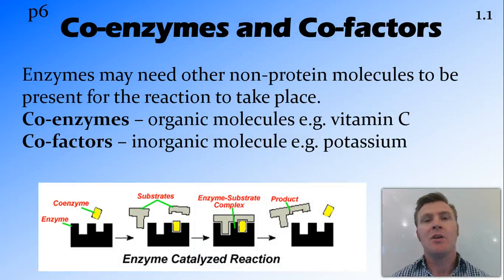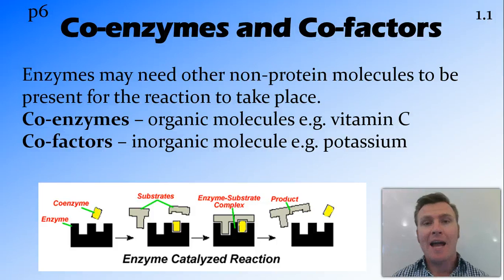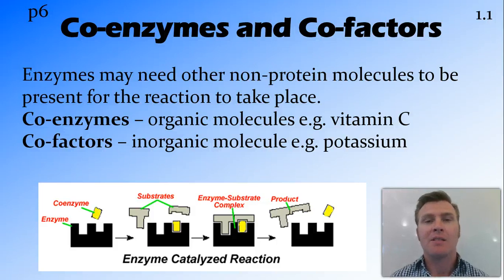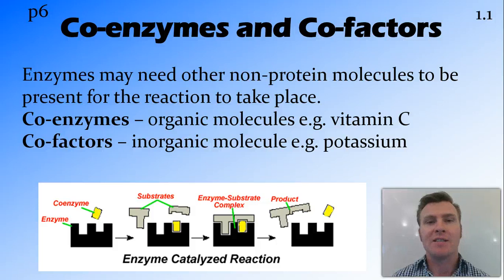Some enzymes require another molecule to be present for them to work properly. This is a non-protein molecule — not another enzyme. If it is an organic molecule, we refer to it as a coenzyme. For example, vitamins are organic molecules, so vitamin C is a coenzyme. If the required molecule is inorganic, we refer to it as a cofactor — for example, potassium is a cofactor needed in some reactions.